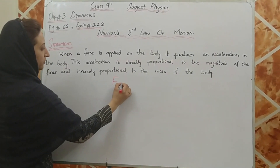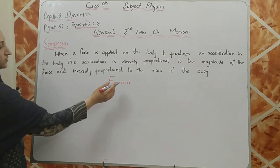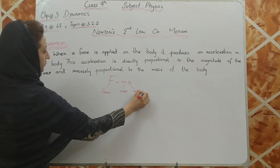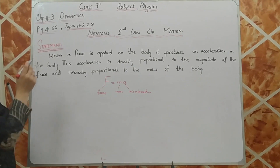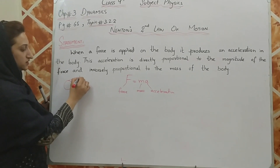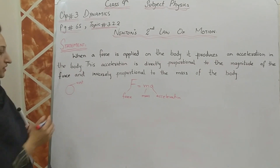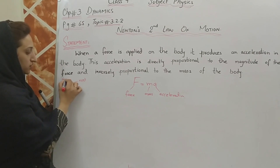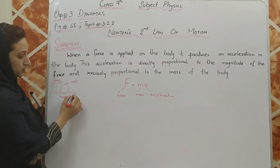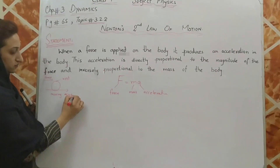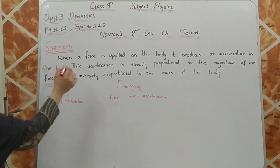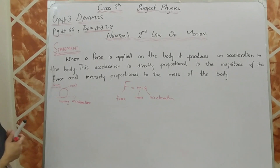From this statement we derive the relation F equals ma, where F stands for force, m for mass, and a for acceleration. To justify the first line, I will take the example of a ball. The ball is in a state of rest until a force is applied on it. If I kick the ball, it starts moving — velocity changes, which means acceleration is produced.